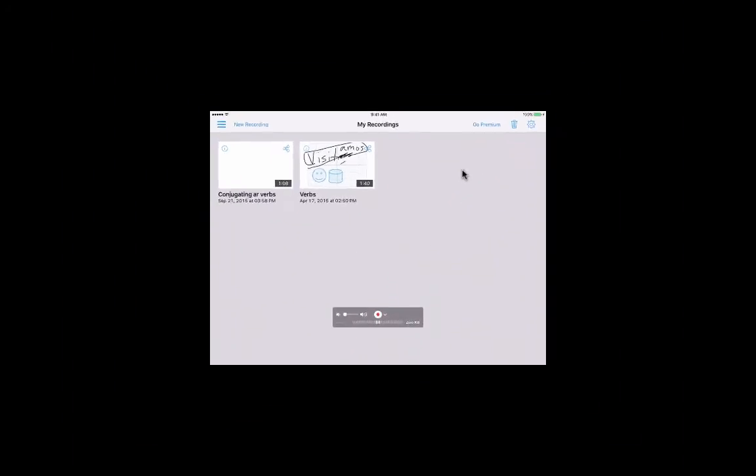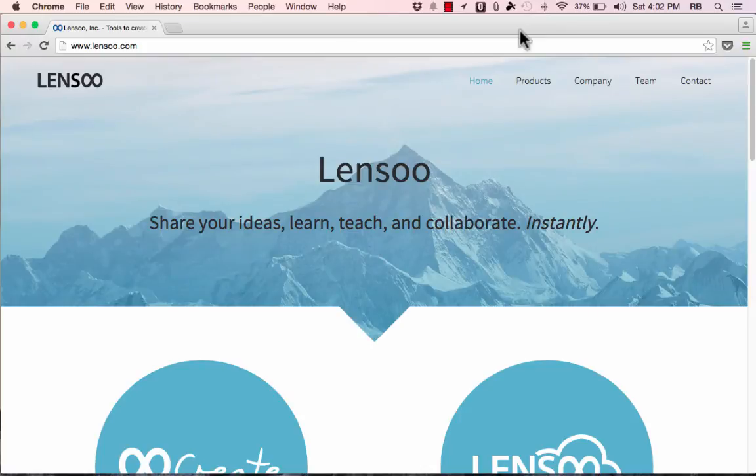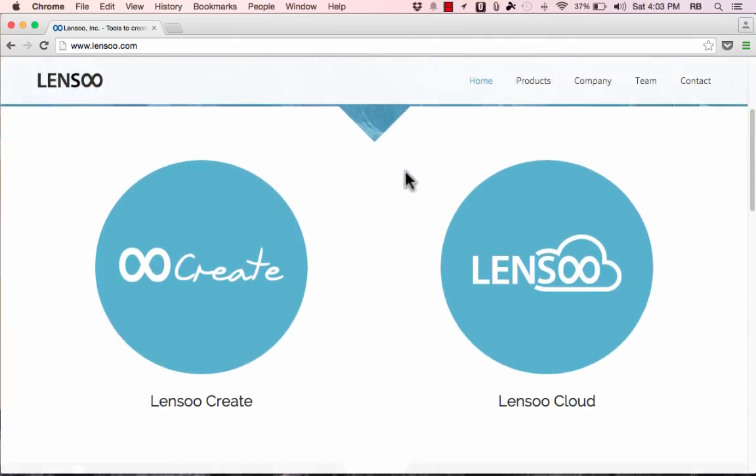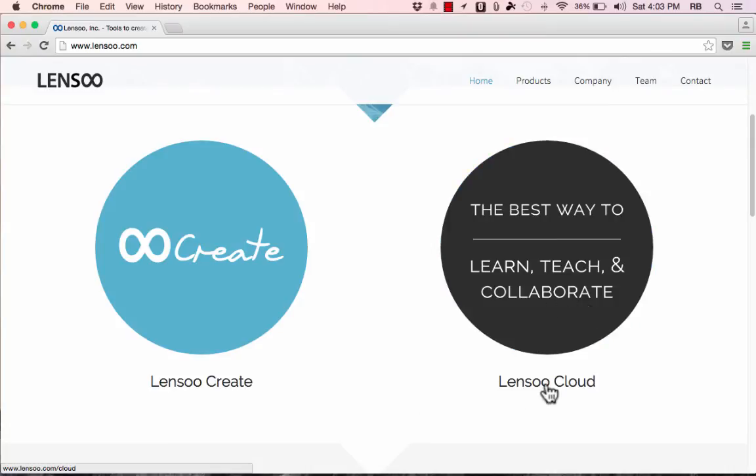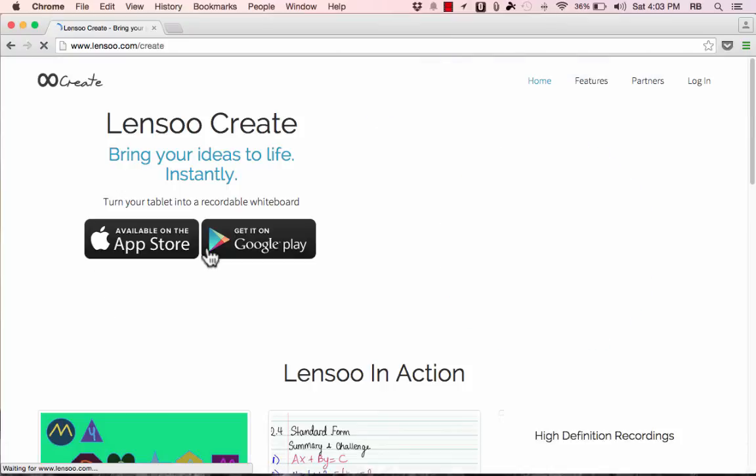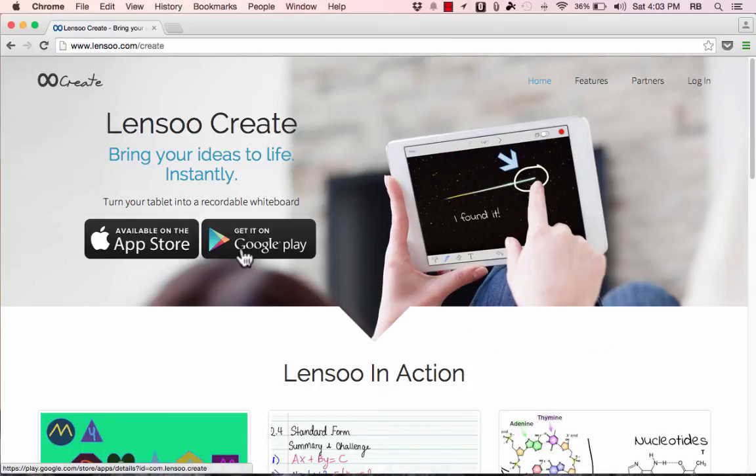At this point in this video, I'm going to switch views and show you the Lenso website. So this is Lenso.com. Here, you can see that they have two main products, Lenso Cloud and Lenso Create. I'm going to click on the Create version of it. And it takes me to this screen where it encourages people to use it, whether it be on Google, Android devices, or on Apple devices. But here in the upper right corner, there is a login.